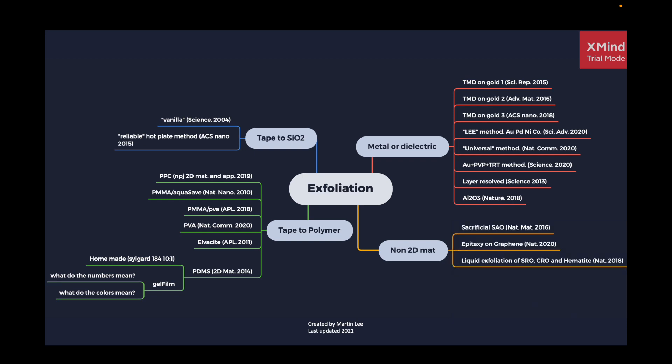The first exfoliation method we'll explore is the OG of the exfoliation methods. This method was used by Sirs Geim and Novoselov to isolate the graphene sheets for the first time, and dates back to the mid-1900s when scientists reported on making 2D flakes that were only several molecular layers thick.